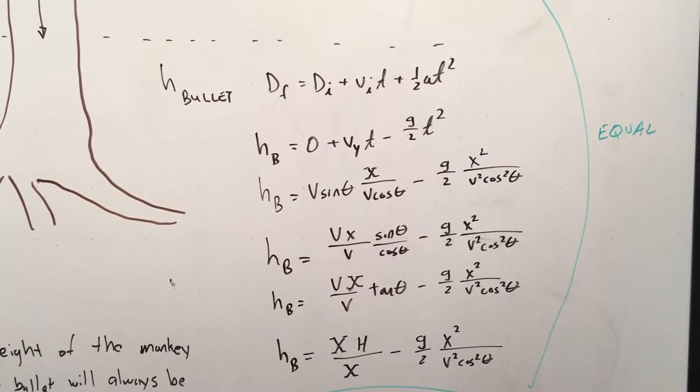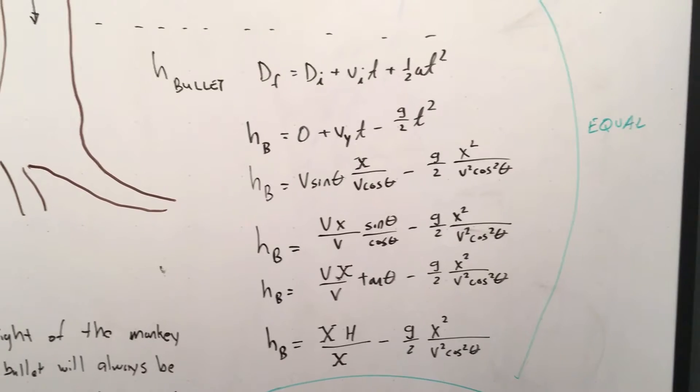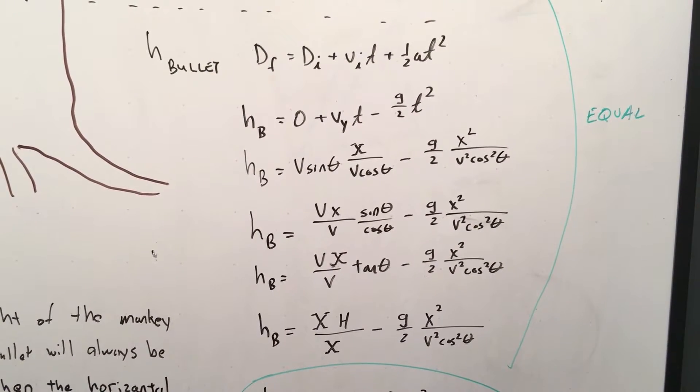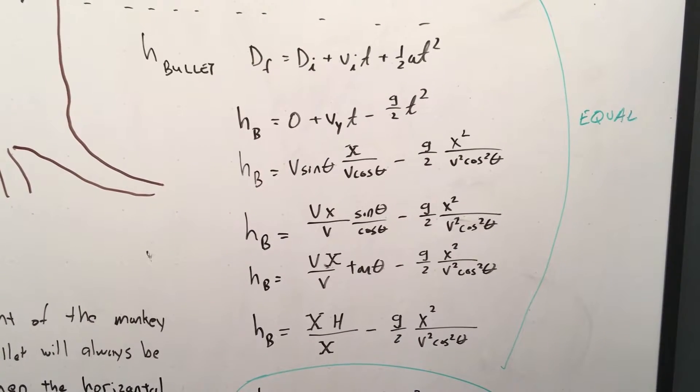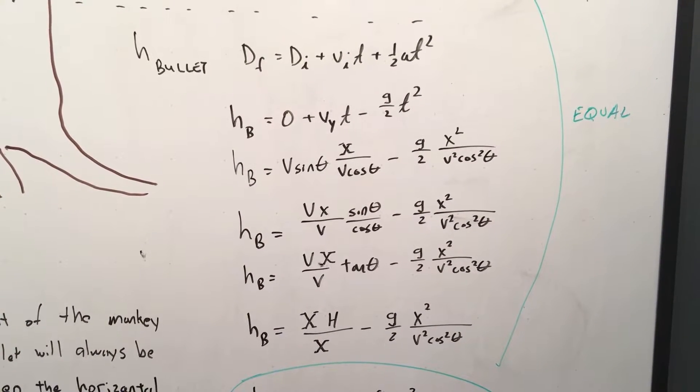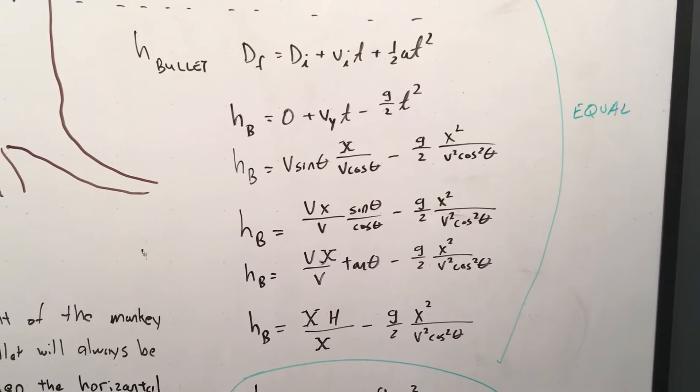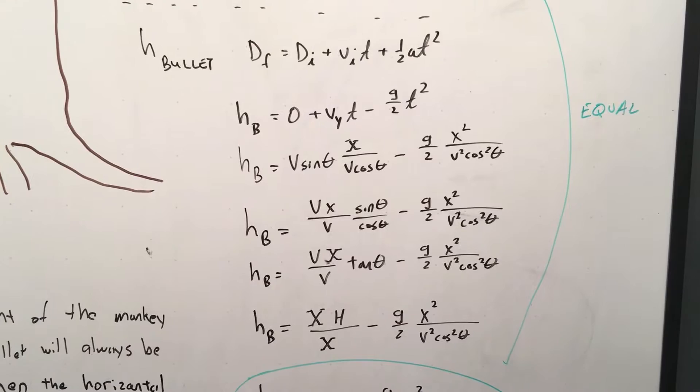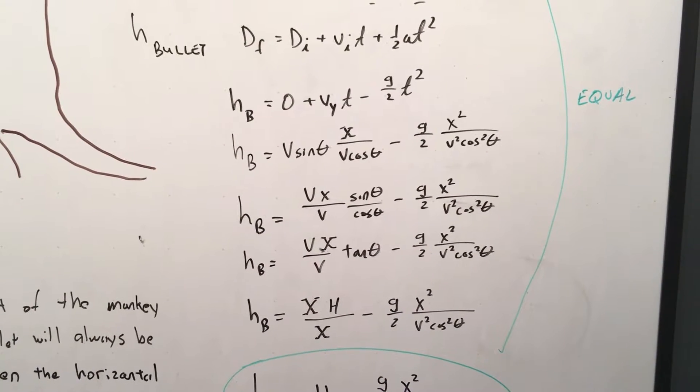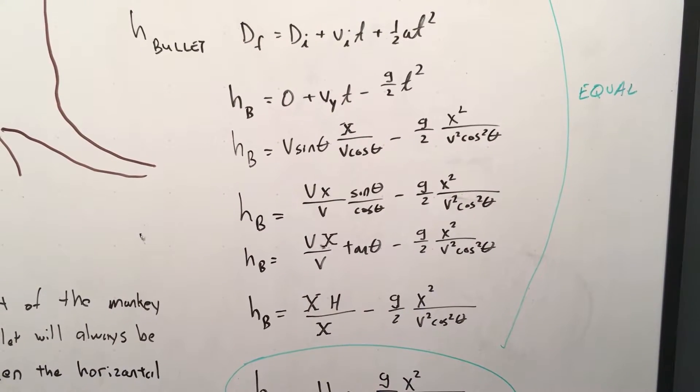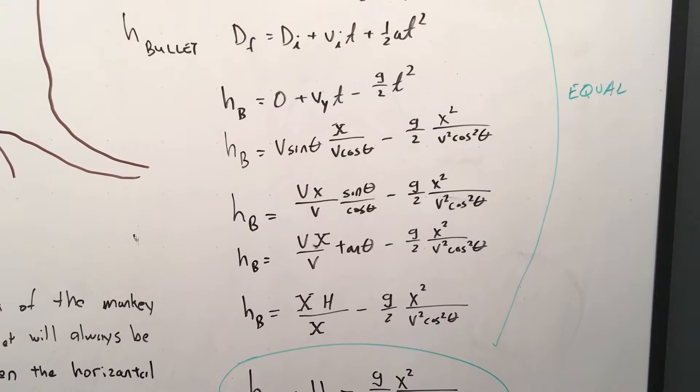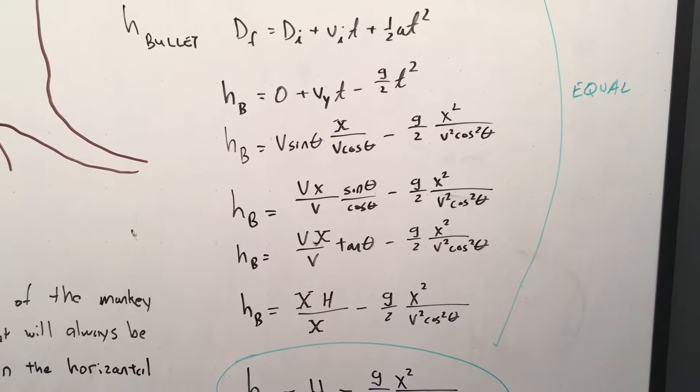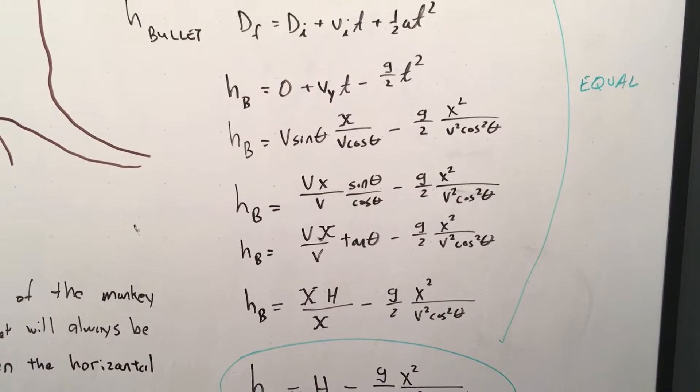Now let's look at the height of the bullet. Use the same formula, only this time the distance final, since its initial distance is zero at the origin, it's got a V initial, which is VY. And it's going to accelerate due to gravity down. So start subbing in. You get height of the bullet is V sine theta, which is the initial velocity, times t, which is X over V cosine theta, minus g over 2 X squared over V squared cosine squared theta.